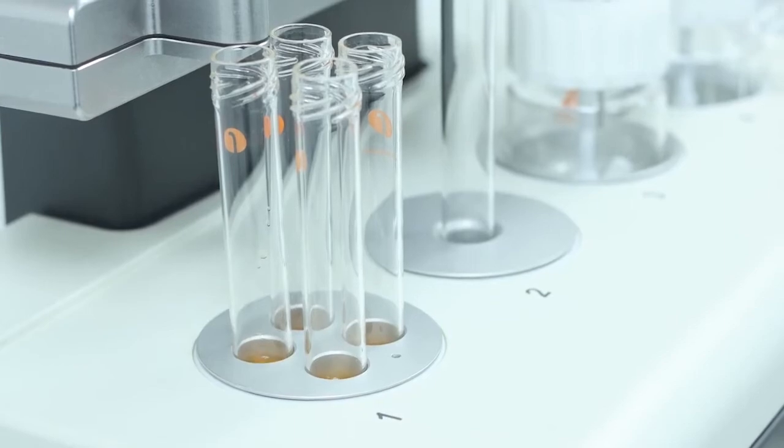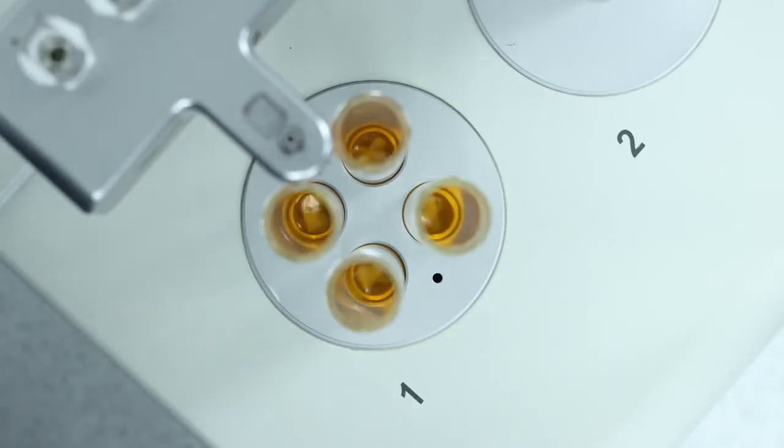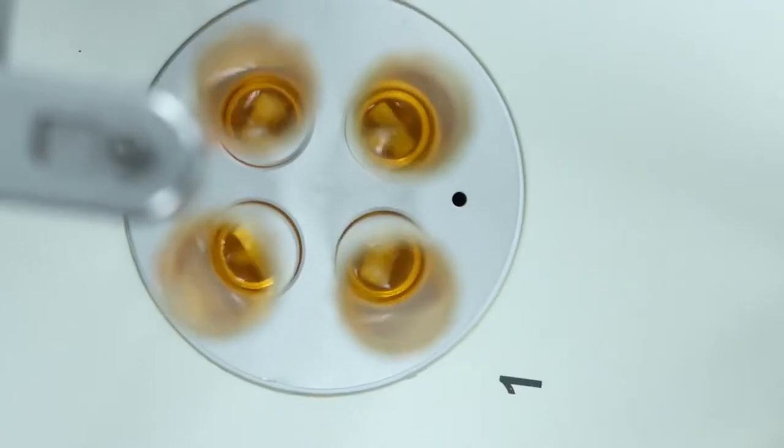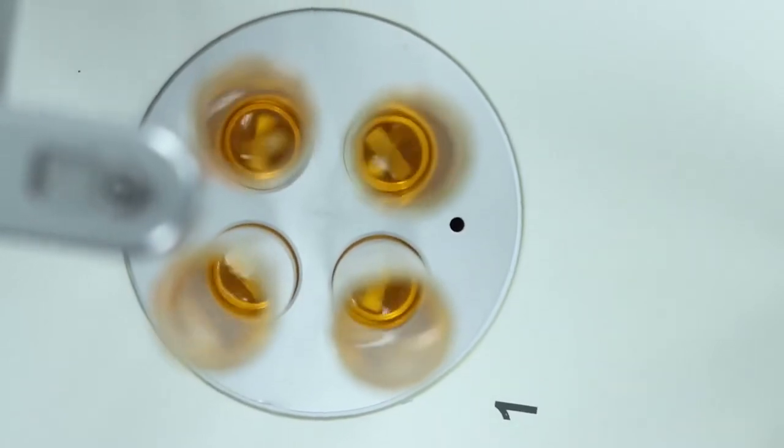All the tubes or vials are now positioned in a circle at the same distance from the magnet in the center, which means the stirring will be the same in all positions.